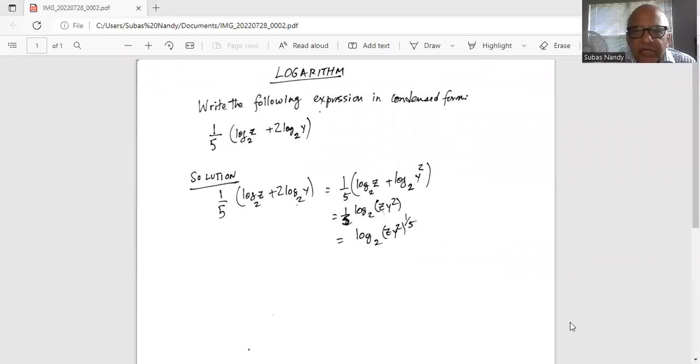Write the following expression in condensed form: one-fifth inside parenthesis logarithm z to the base 2 and 2 logarithm y to the base 2. Solution: